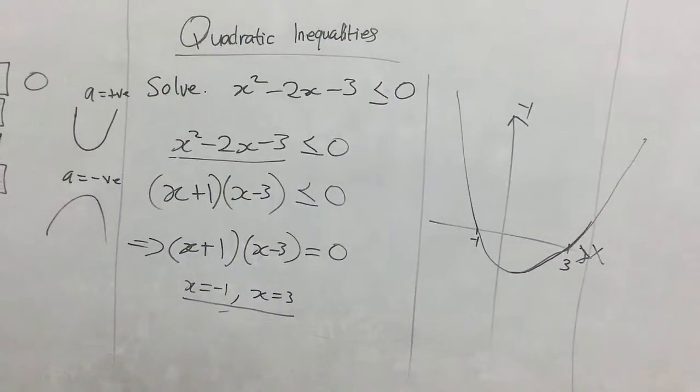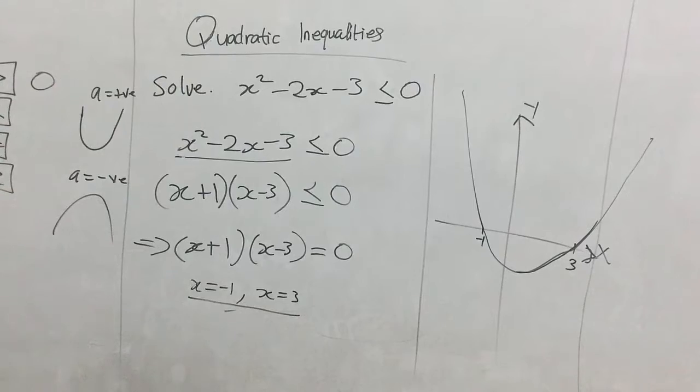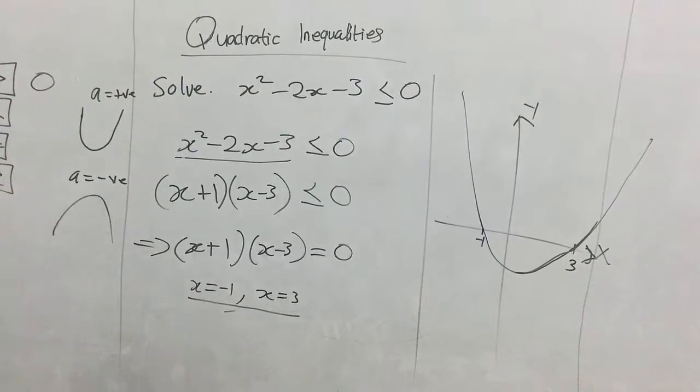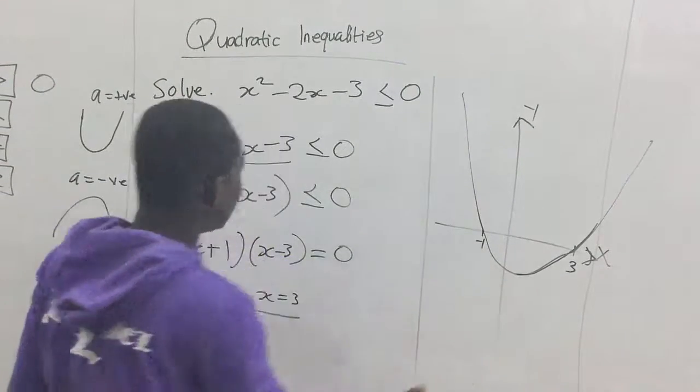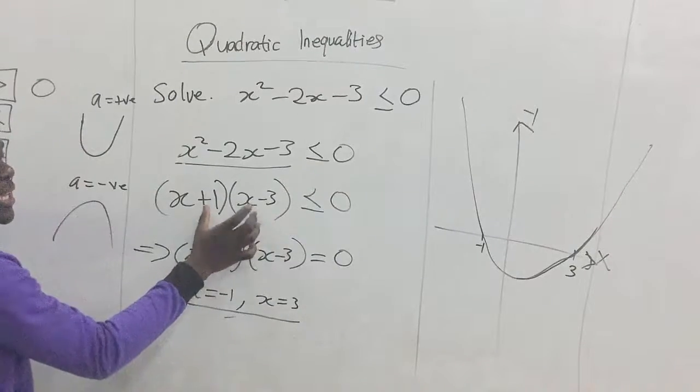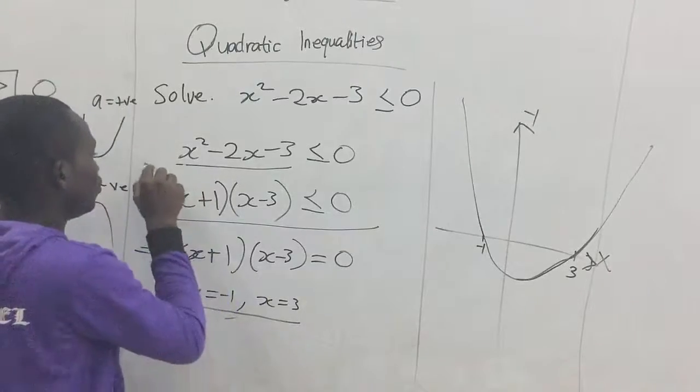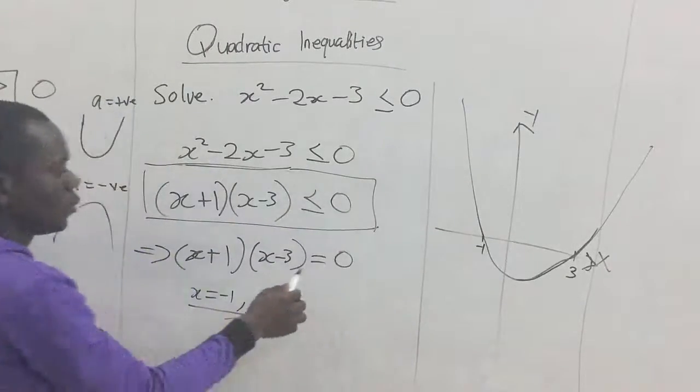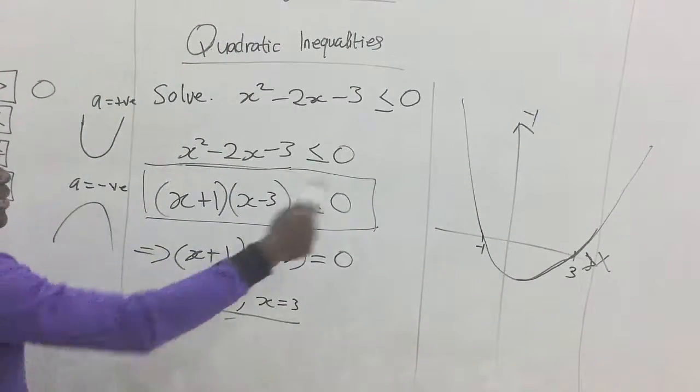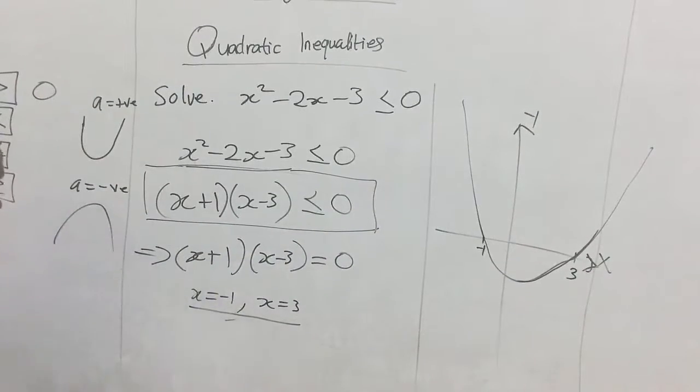Now, our next task, which is to get the graph, is done. Now, we are going to find parts of the graph that will satisfy this inequality here. Because that's what we are to work for. This one only gives us a graph and we use the graph to analyze the inequality here.